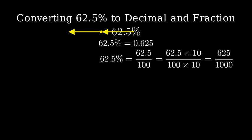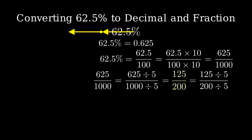Now we can simplify this fraction. Let's find the greatest common factor of 625 and 1000. Both numbers are divisible by 5, so let's divide both by 5. This gives us 125 over 200.